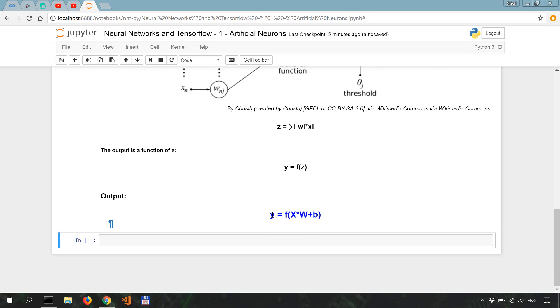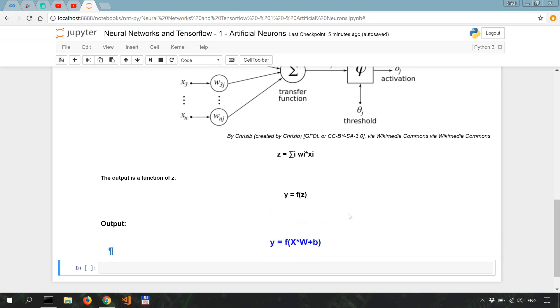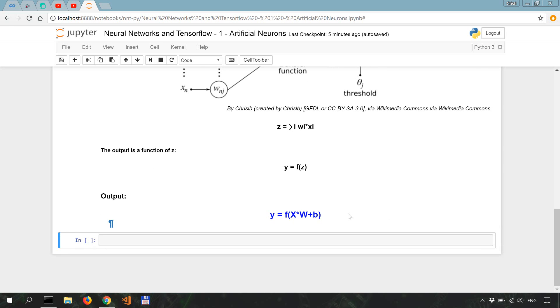So then we could write the output of the neuron as follows: Y, which is our output, or Y hat, equals F, a function of the dot product between the vector of inputs, so the vector of X, and the vector of weights, to which we're gonna add the bias, which, like I said, is a constant.